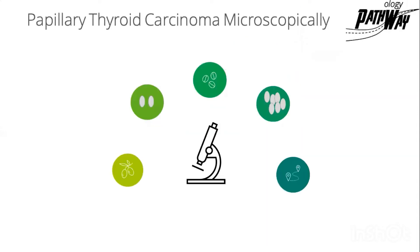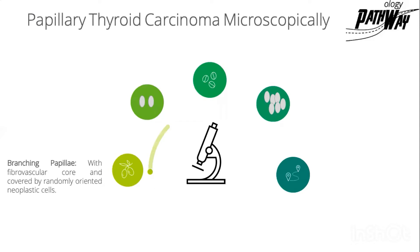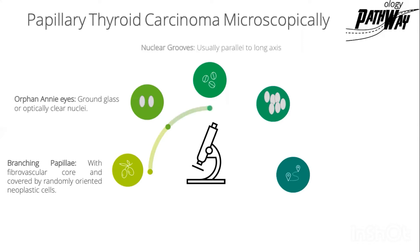How are we going to see papillary thyroid carcinoma under the microscope? Number one, branching papillae with fibrovascular core, covered by randomly-oriented neoplastic cells. Number two, orphan Annie eyes — the ground glass appearance, or optically clear nuclei. Number three, nuclear grooves, usually parallel to the long axis, like the coffee bean.